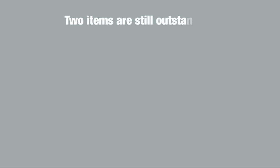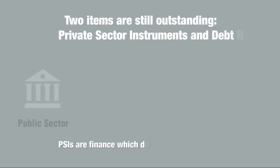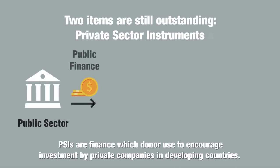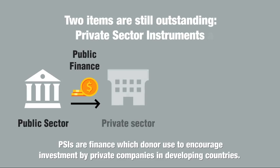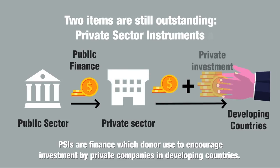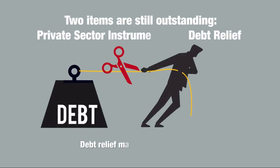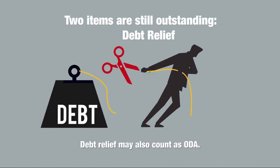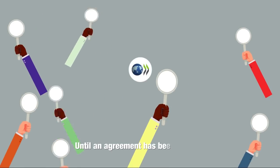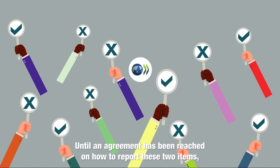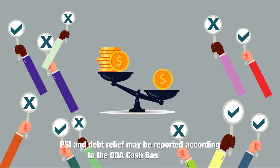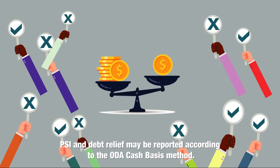Two items are still outstanding: private sector instruments and debt relief. Private sector instruments, or PSIs, are finance which donors use to encourage investment by private companies in developing countries. Some can count as ODA. Debt relief may also count as ODA. Until an agreement has been reached on how to report these two items, PSI and debt relief may be reported according to the ODA cash basis method.